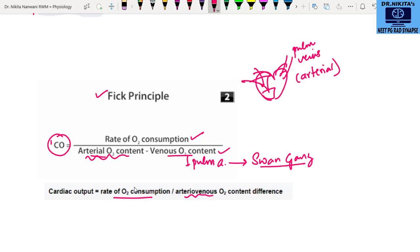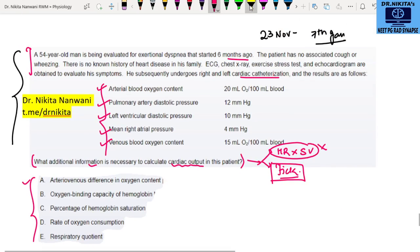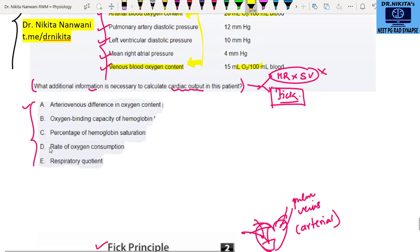So now what we need for Fick principle, rate of oxygen consumption upon the arteriovenous oxygen content difference. Now in the question, we have been given your arterial blood oxygen content and the venous blood oxygen content has been given. So we can calculate the gradient, the difference between the two by subtracting. So what else we require in the formula is your rate of oxygen consumption. And that is why this is the answer that the additional information required would be rate of oxygen consumption. So this is the question which was based on your simple Fick principle to calculate the cardiac output.